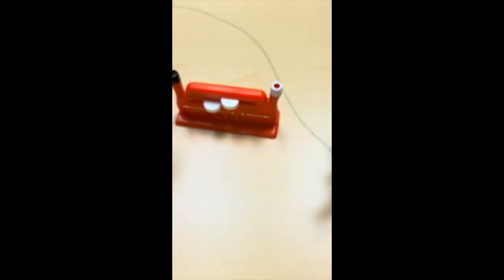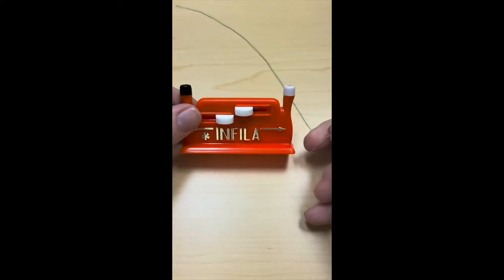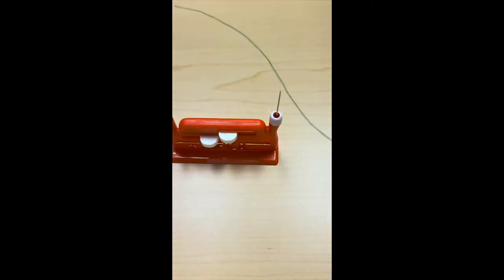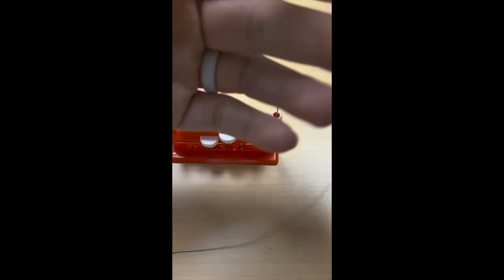So in this video we're going to show how to use the automatic needle threader. You'll put the eye of the needle down inside of the chimney that's on the far side.